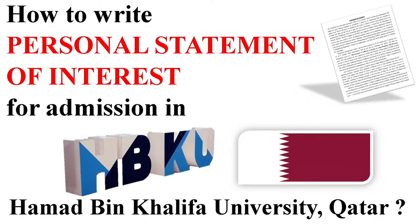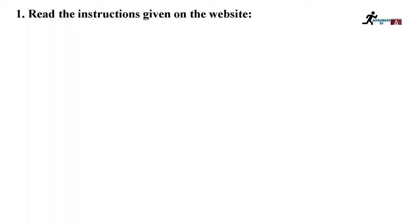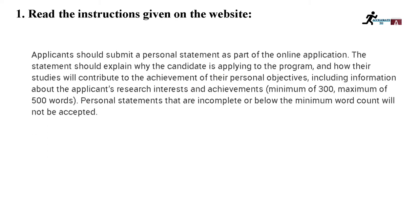You know there are different requirements for getting admission in Hamad bin Khalifa University Qatar, and one of them is personal statement of interest. Tip number one is to read the instructions given on the website. The instructions include that you have to explain why the candidate is applying to the program and how their studies will contribute to their personal objectives, including information about research interests and achievements. You have to write a minimum of 300 words and a maximum of 500 words. If you write below the minimum word count it will not be accepted and counted as incomplete, so I would suggest you write close to 500 words.